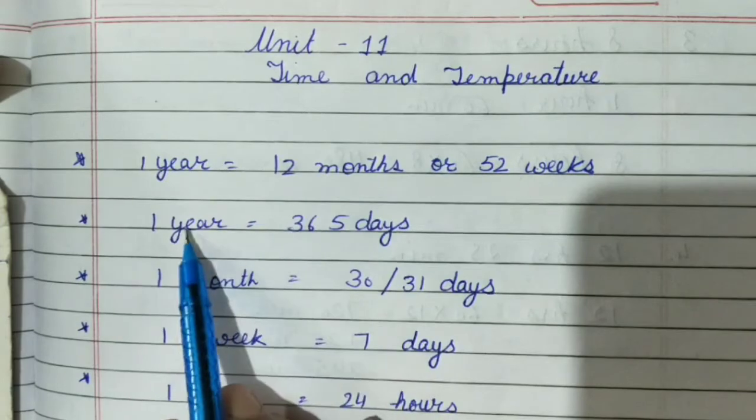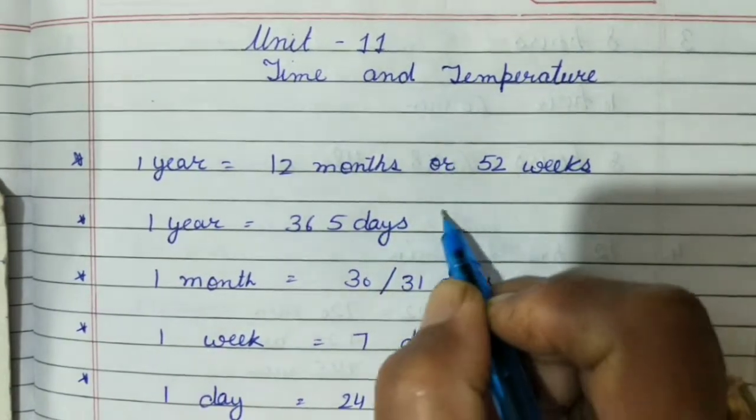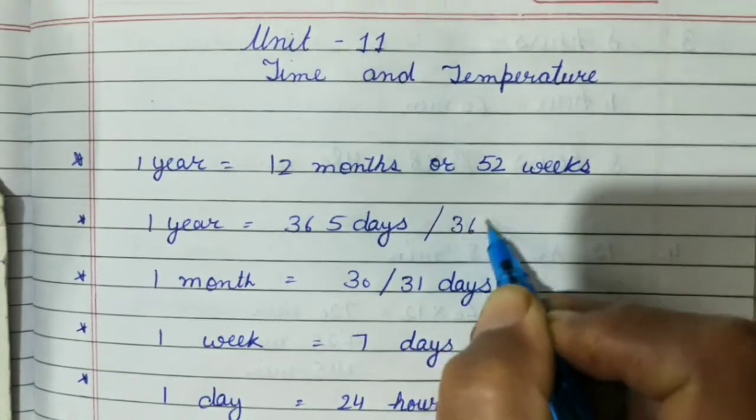One year is equal to 12 months. One year is equal to 365 days, or in a leap year, 366 days.